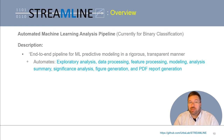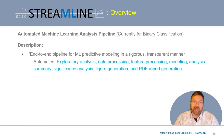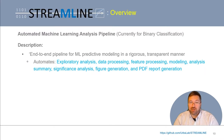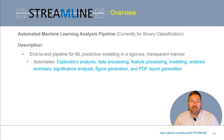Streamline currently automates the following elements of a typical machine learning analysis pipeline: exploratory analysis, data processing, feature processing, modeling, summarizing the analysis with a wide range of performance metrics, conducting significance analyses, figure generation, and composing a PDF report of how the pipeline was run and summarizing key results throughout all elements of the process.